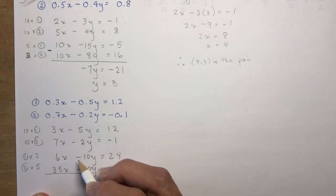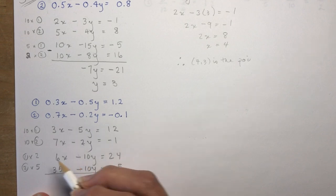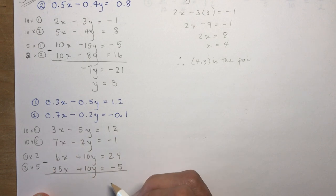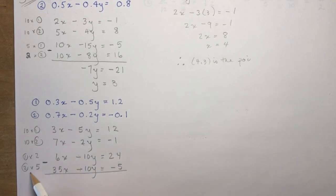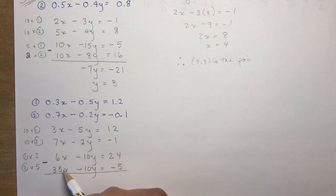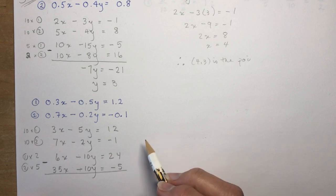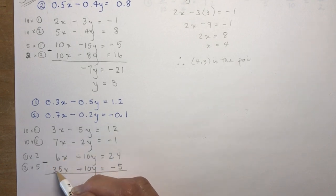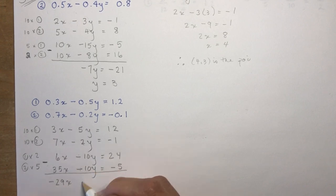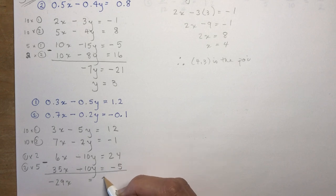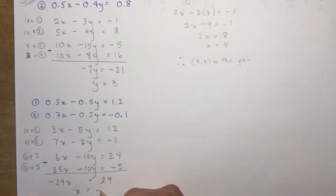The signs are the same — both minus — so I subtract again. 6x minus 35x gives minus 29x. The y-terms cancel. 24 minus (minus 5) is 29. So minus 29x equals 29, giving x equals negative 1.